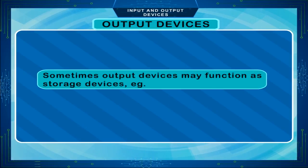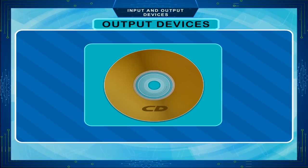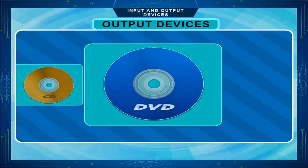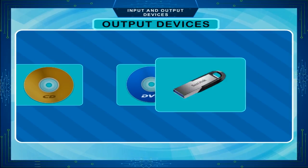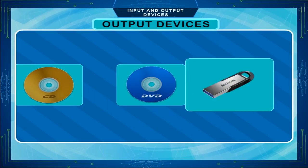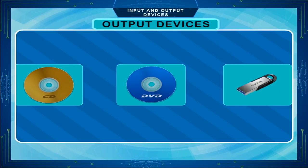Sometimes output devices may also function as storage devices, for example CD, DVD, pen drive, etc., in which files or documents can be copied and taken anywhere.